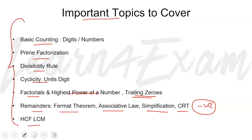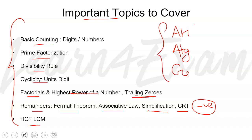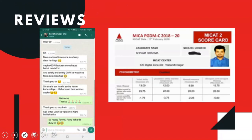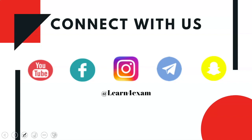These are the things I wanted to tell you. One last suggestion: do not waste a lot of time on number system. Questions from number system are around 5 to 10 percent of the total questions in the quant section — around 2 to 3 questions only. Your primary focus should be arithmetic, algebra, and geometry. Before I end, I wanted to show you the 2019 results and reviews of our classes. If you are not connected with us, please connect over YouTube, Facebook, Instagram, Telegram, and Snapchat at Learn for Exam. Have a very good day ahead and take care. Bye-bye.